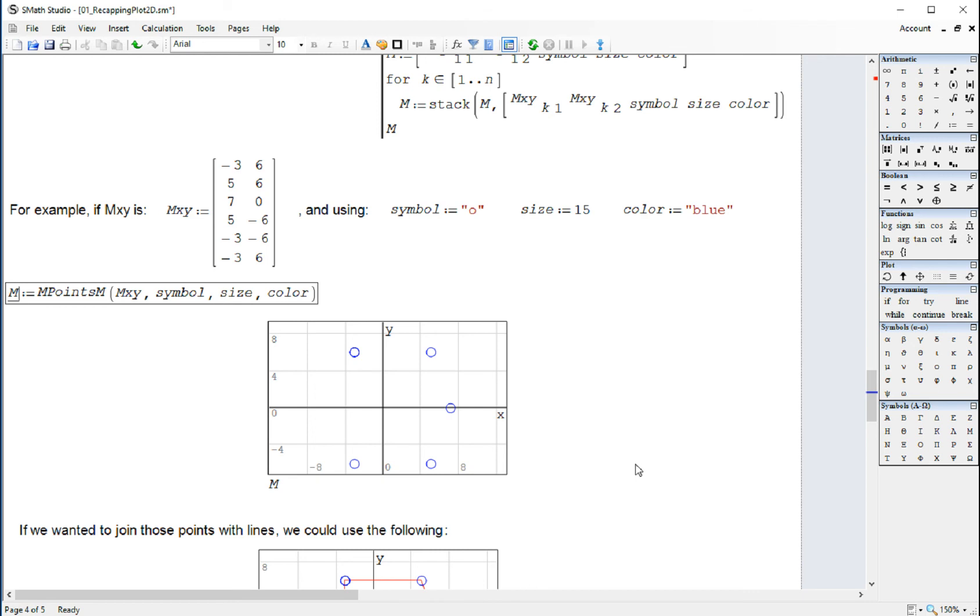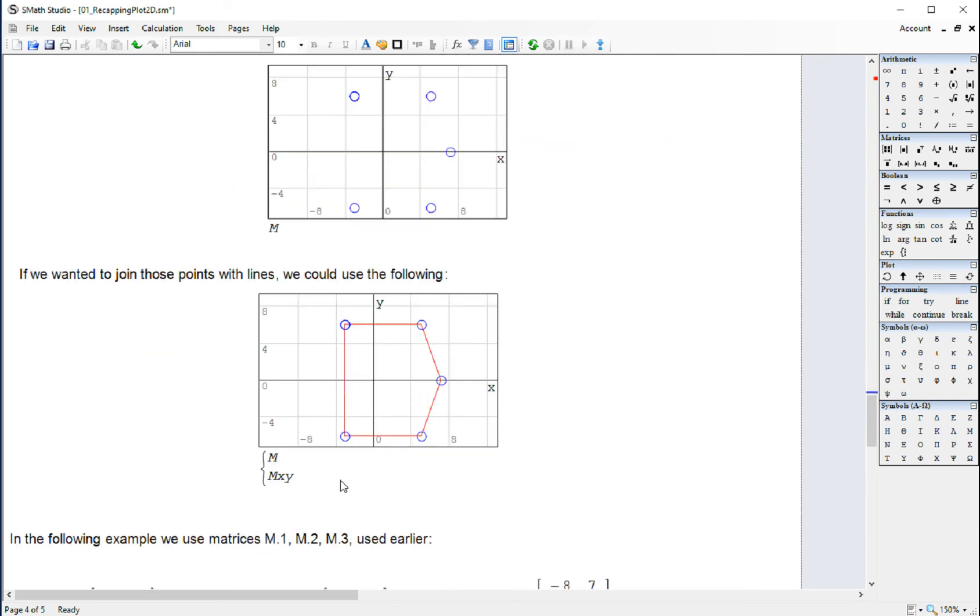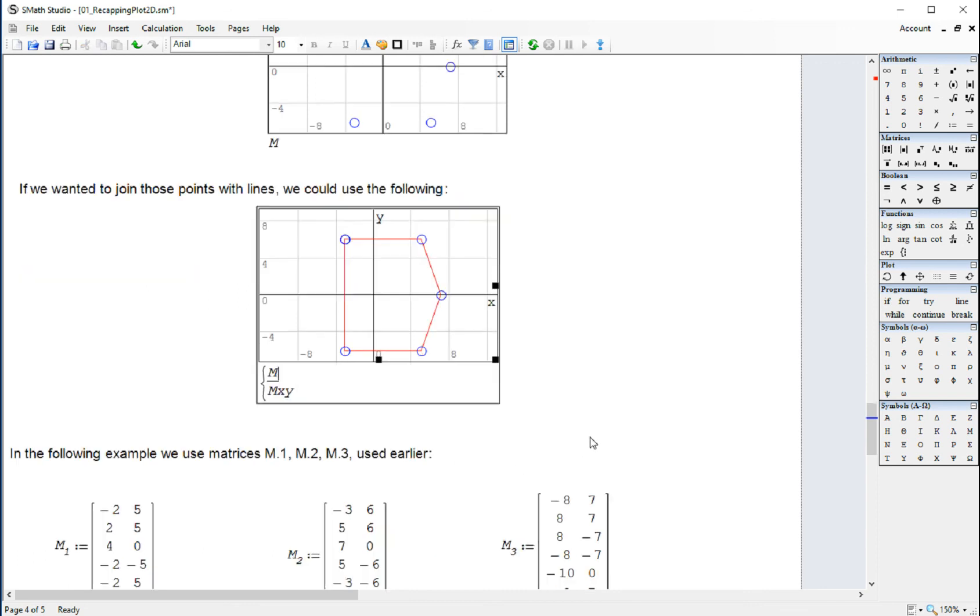Now suppose you want to join this point. Then you've got to do is plot the original matrix M with the, I'm sorry, the original matrix MXY with the matrix M of points. And you get that collection of things there.